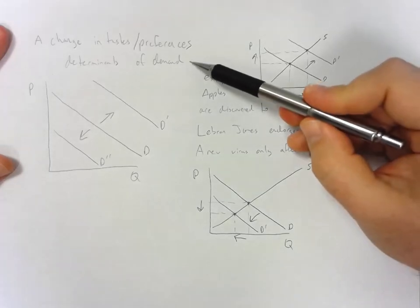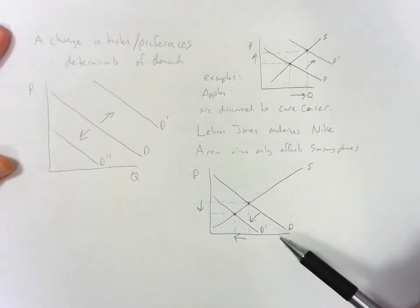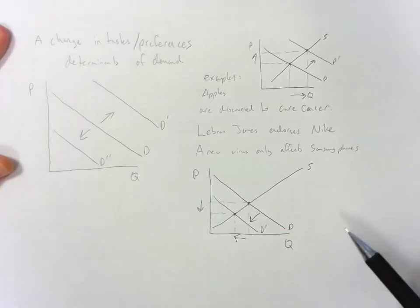That's just a little bit of an example of how changes in tastes and preferences can affect the demand curve and the resulting supply and demand graph.